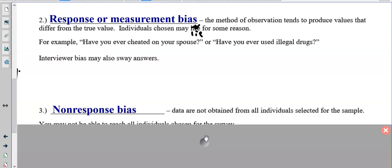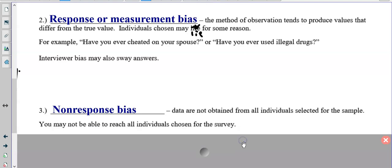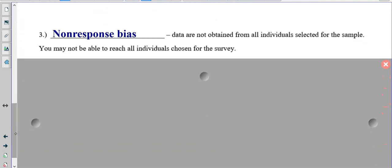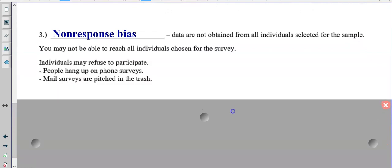Number three is called non-response bias. Now this one is where data are not obtained from all individuals selected for the sample. You may not be able to reach them all. Or they may just refuse. I'm sure you've been at home when someone's calling and says, hey, can you take a short survey? No, hang up. Or you call customer service and they say, please hold on the line after we're done with you to complete a short survey, and you hang up and don't do it. That would be non-response.